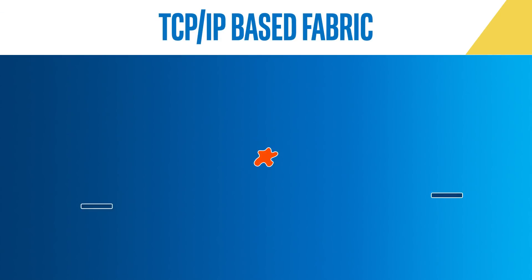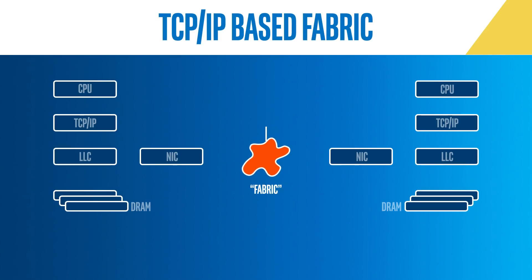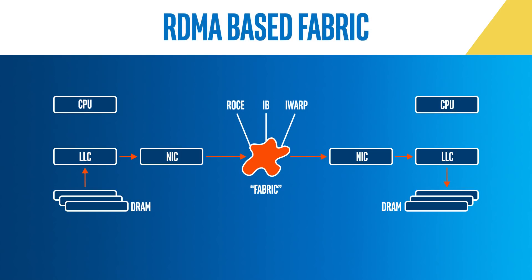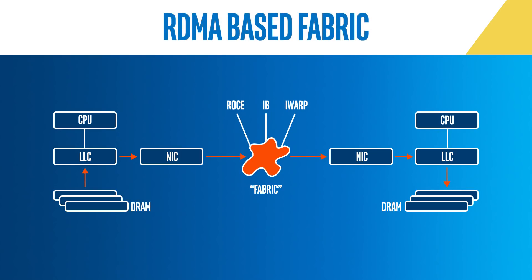Two types of fabrics are typically used. The first is TCP/IP-based networks that utilize the CPU on each end of the connection to move the data. The second is remote DMA-capable networks, or RDMA. It is a more efficient transport that will be utilized in PMOF.